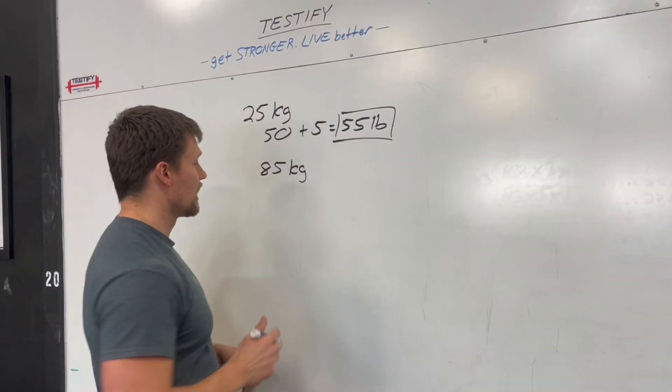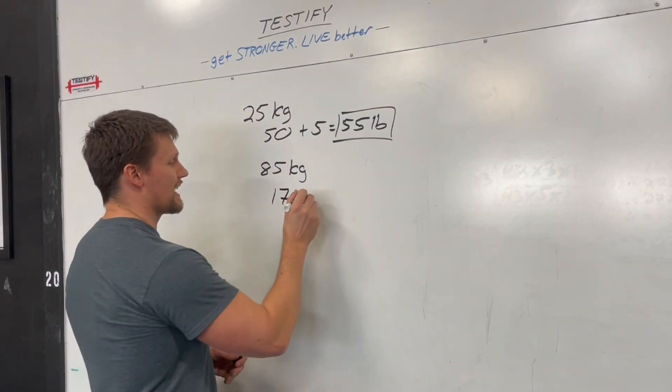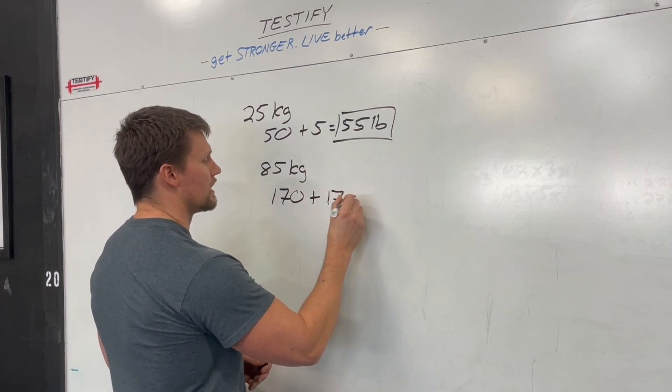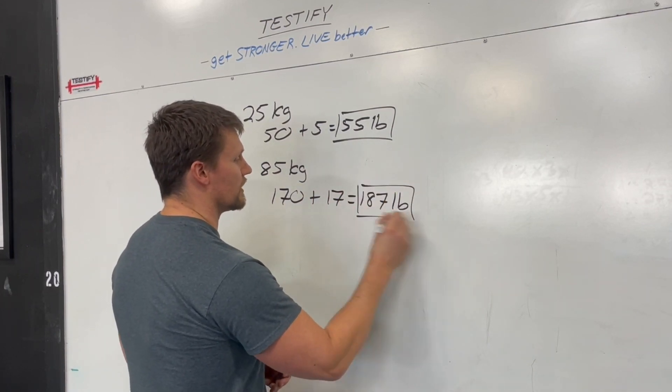Did you? Double it. You get 170. Got to find 10% of that. So we're going to have 17. And altogether you get 187 pounds.